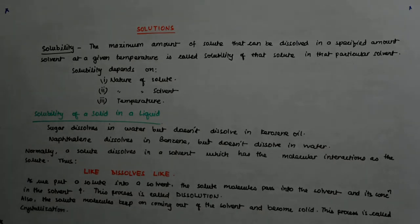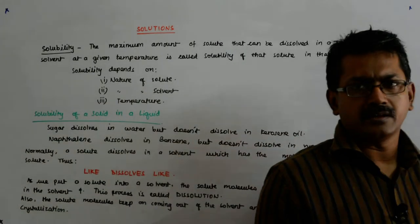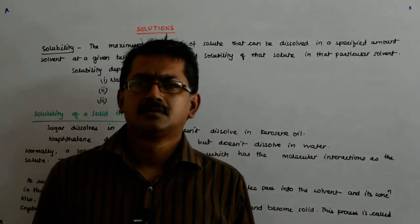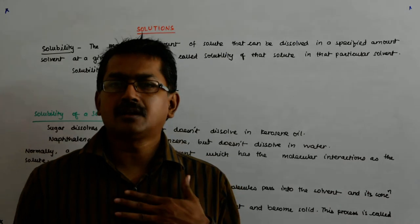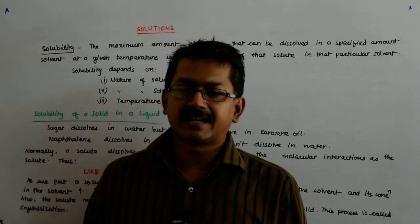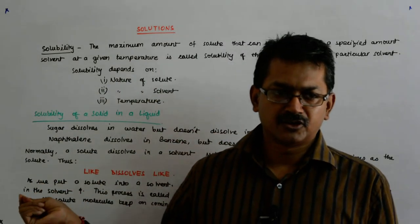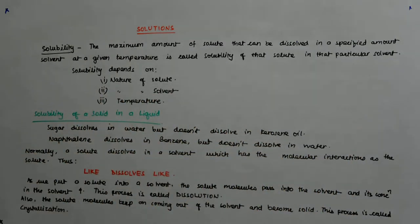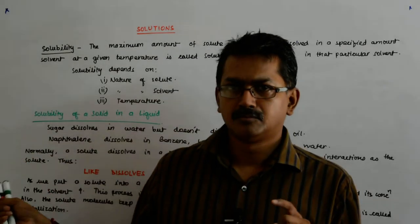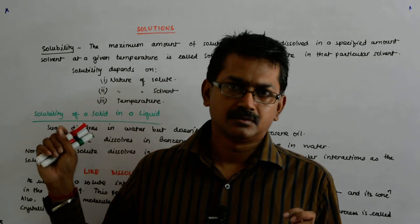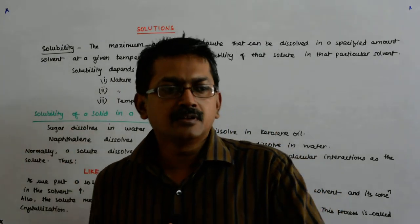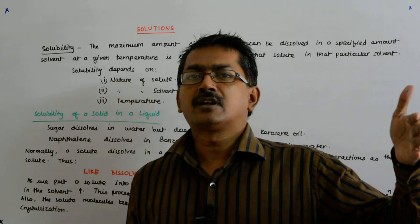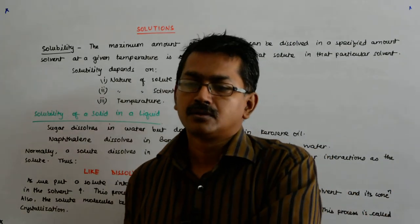The solute molecules keep on coming out of the solvent and become solid. This is kind of a diffusion kind of thing that keeps on happening. It is not a one-way movement. For example, you burn an incense stick at one corner of the room. The molecules of the incense stick which are perfumed will move to the other part. Why? Because the concentration here is more than the concentration there. But you cannot restrict the air molecules from those parts coming into this part.